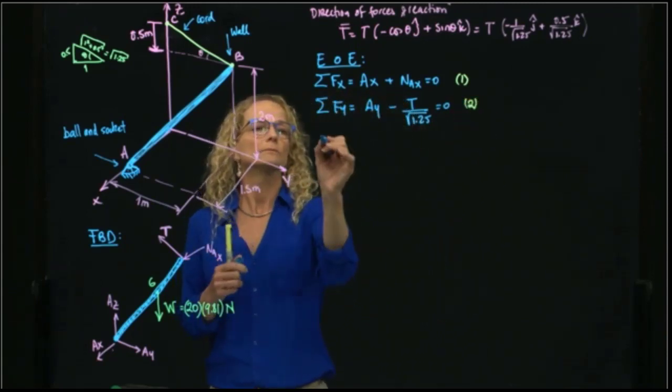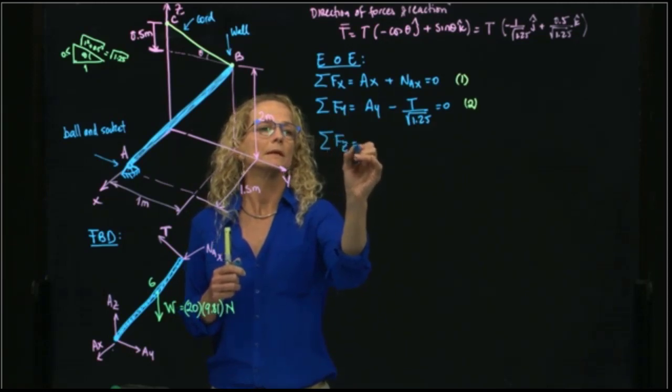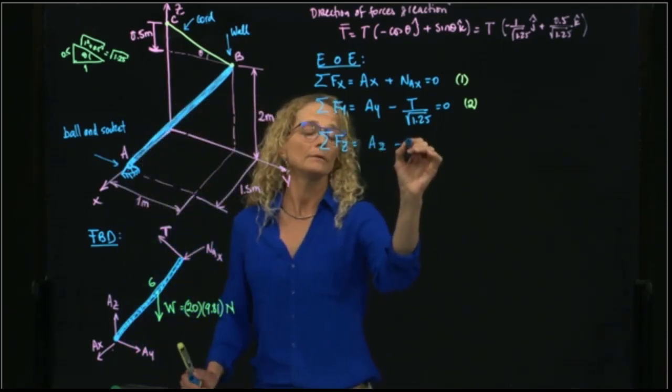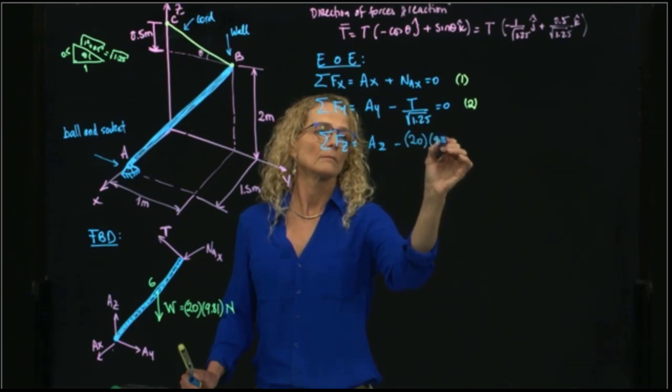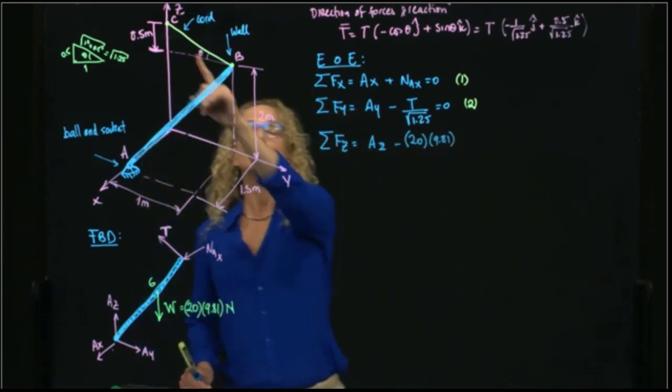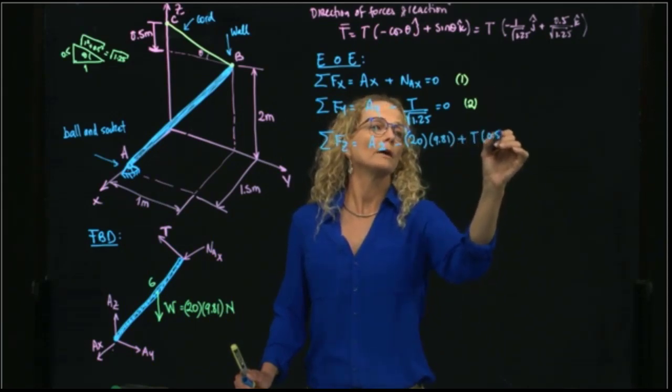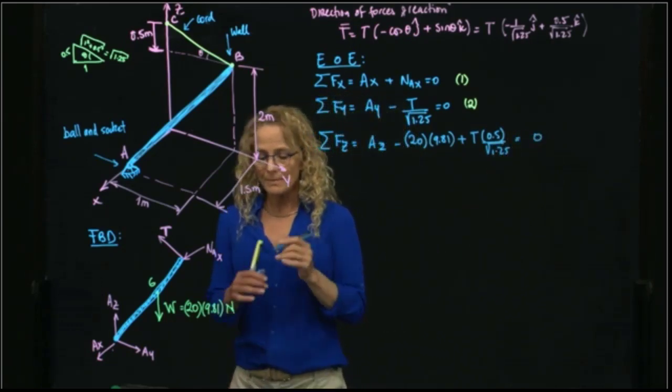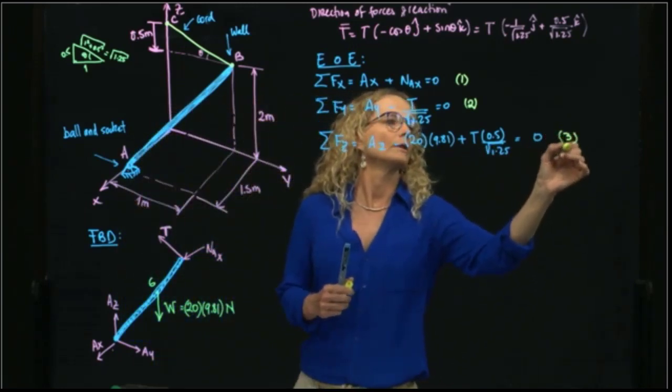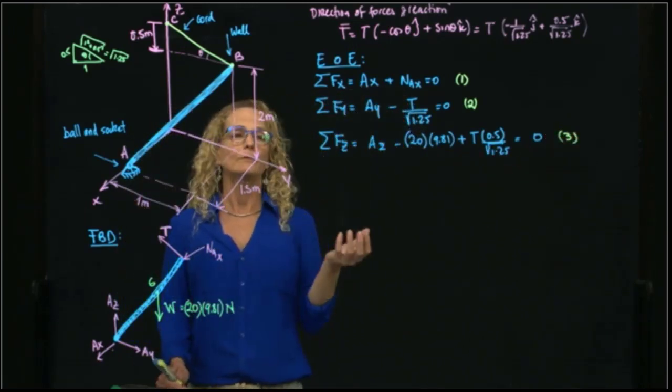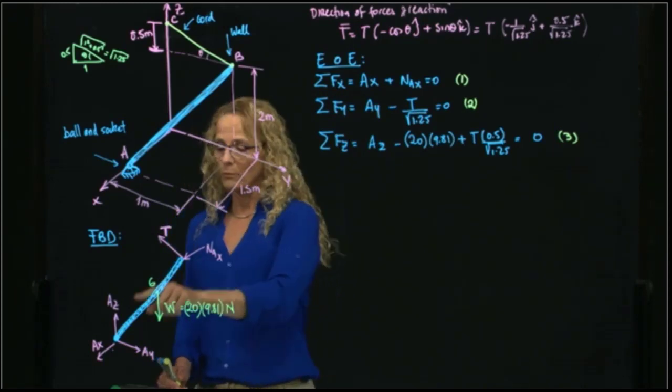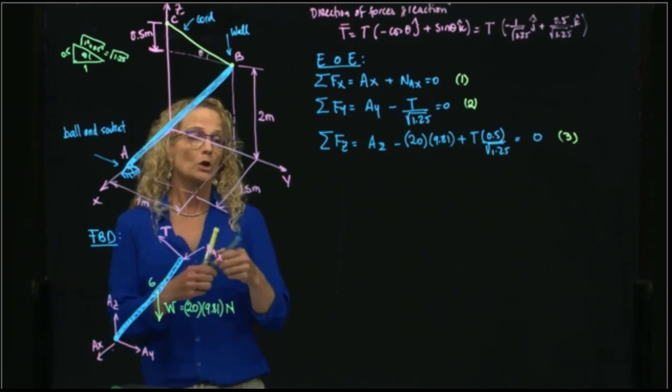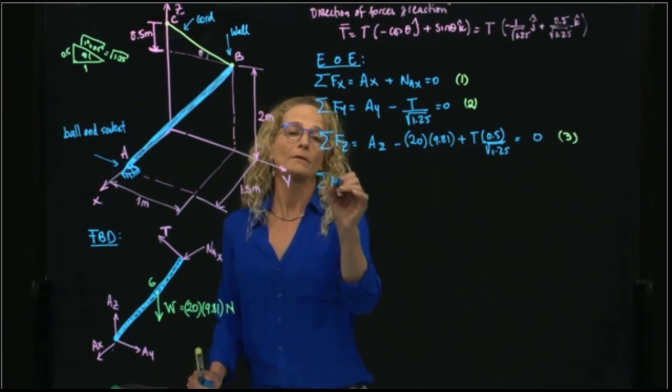My third equation will be forces in Z. In Z, I have Az, and I have negative the weight, and I have positive the component of the tension, which is 0.5 square root of 1.25. And that equals to 0. So those are my three equations that come from adding forces. Now I have to take the moment. So what I'm going to do is take moment with respect to point A, and divide that vector equation of the moment in three equations. So I will take the summation of all moments at A.